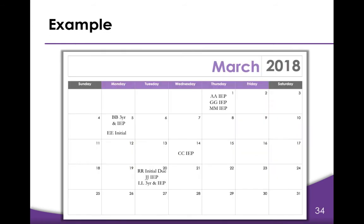Another example might be a monthly calendar. It's important to remember, though, that if you use a large desk blotter-type calendar, it's essential that it isn't kept in a public place like a meeting room. Even though only initials are used, it still contains confidential information about our students.